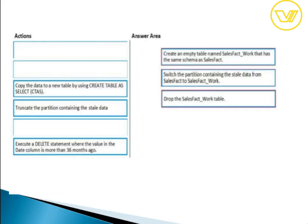For question twenty-eight about partitioning: if you want to move data from one partitioned table to another, create an empty table with the same structure as your source table, switch the partition, then drop the staging table.